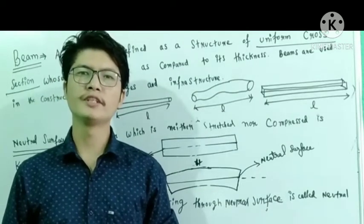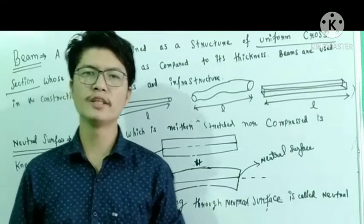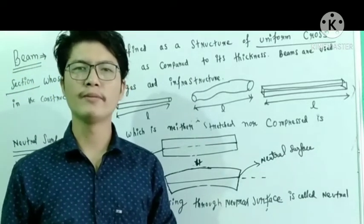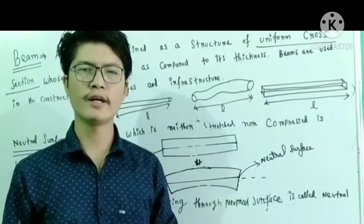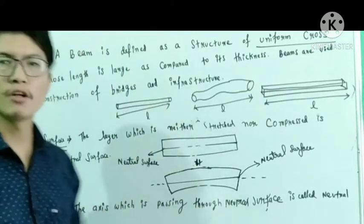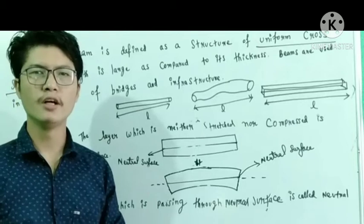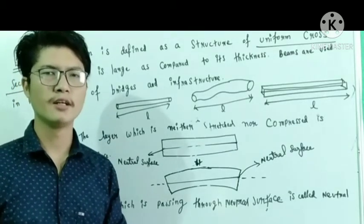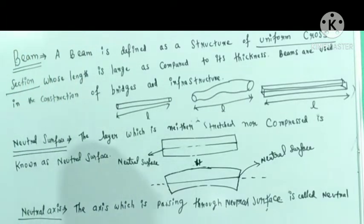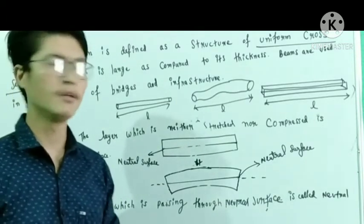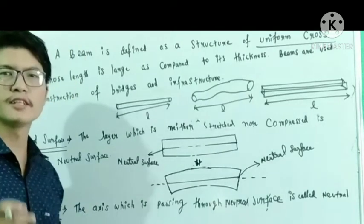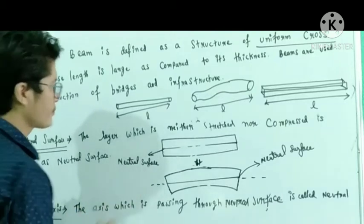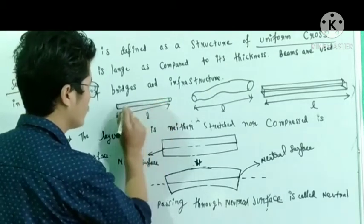Hello students, welcome to Physics class. In today's lecture we will discuss about the beam and its components. A beam in physics is defined as a structure of uniform cross section whose length is large as compared to its thickness. Beams are used in construction of bridges.